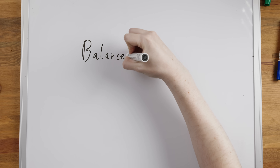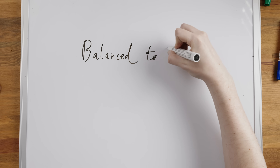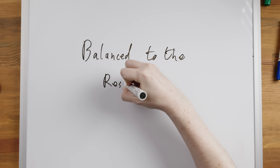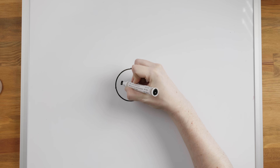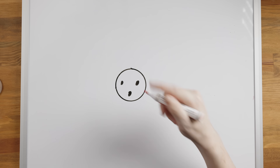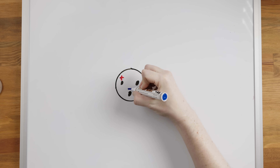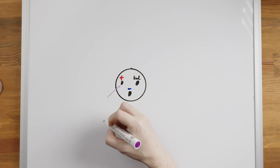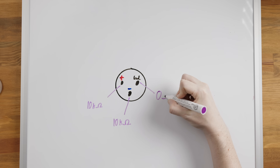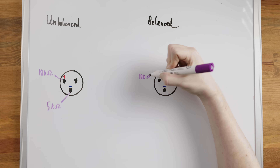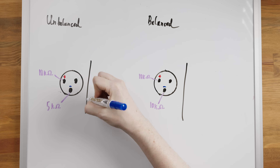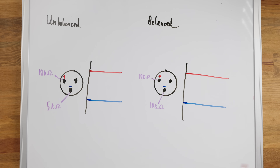This is where balanced connections come in, as they can help to mitigate noise to an enormous extent. Most XLR connections are balanced and differential, but we'll break down each aspect. Balanced requires that both of the signal conductors in a cable have absolutely equal impedance to ground — not nearly equal, but absolutely equal — and it doesn't matter how this is achieved.